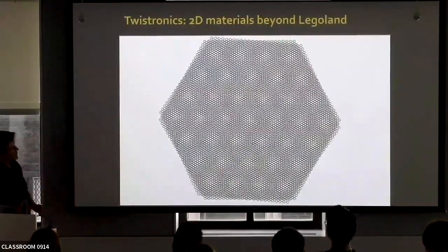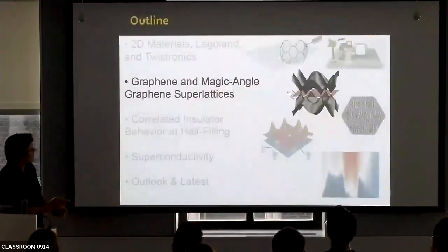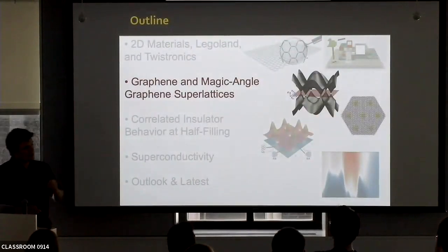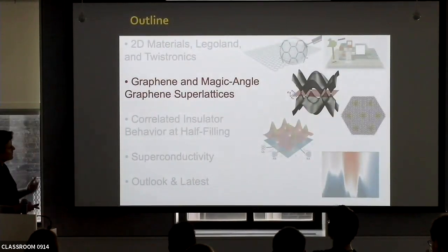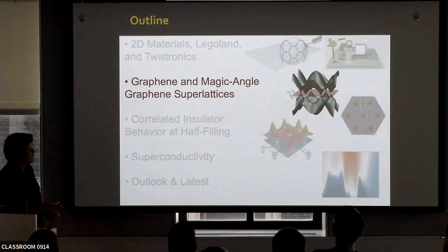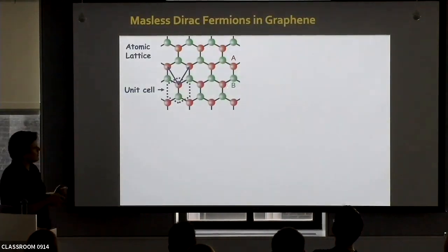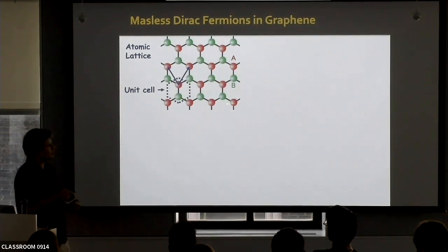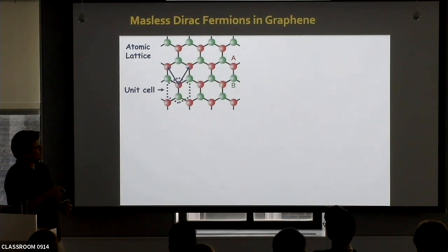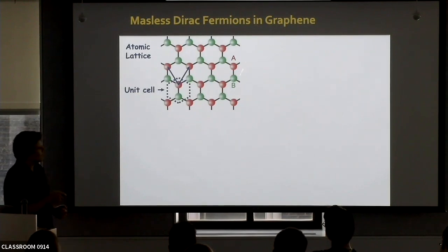Graphene is a honeycomb of carbon atoms. All of these atoms are identical chemically — carbon — but crystallographically they are inequivalent. We say that graphene is a hexagonal lattice with a two-atom basis, calling them A and B atoms. They're all carbon but crystallographically inequivalent.